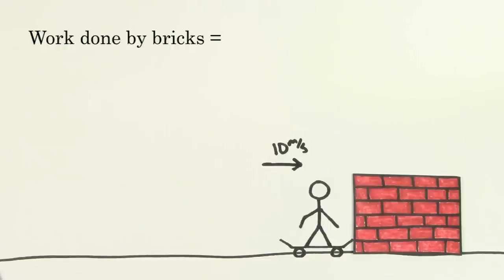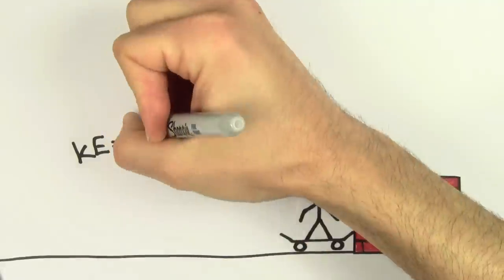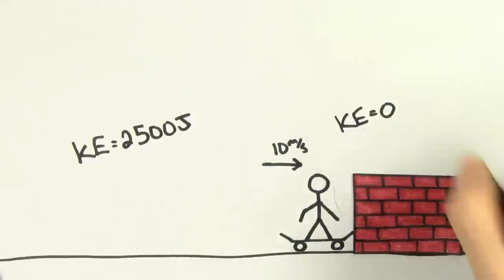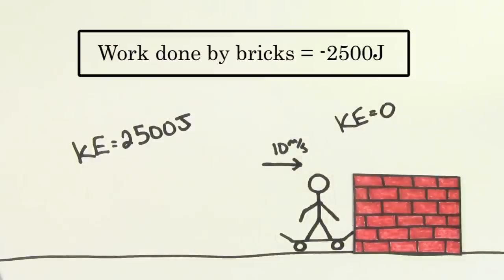To find the work done by the stack of bricks, we just need to figure out how much energy it took away from the skateboarder. Since the skateboarder started with 2500 joules of kinetic energy and ends with 0 joules, the work done by the bricks was negative 2500 joules. It's negative because the bricks took away energy from the skateboarder.